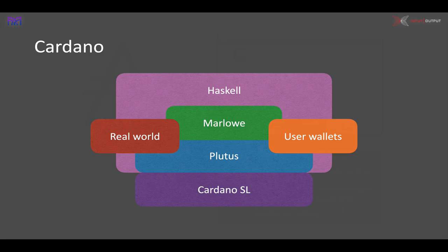Marlowe needs to be linked to the real world — potentially through receiving deposits or getting information about the price of a particular stock or crude oil — and it also needs to be linked to users' wallets so that assets can flow in and out of running Marlowe contracts. That's the general picture of where Marlowe sits in the blockchain ecosystem.